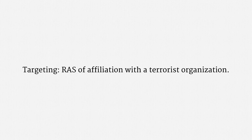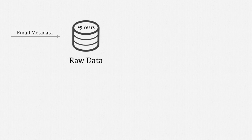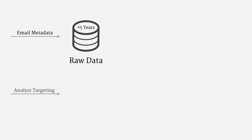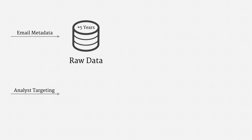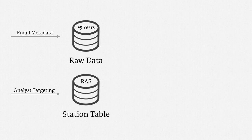Here's my understanding of how it worked, with the caveats that I'm slightly simplifying and slightly borrowing from what's known about the phone metadata program, since there's been more disclosed about that. Email metadata flowed in, in bulk, from collection points on the domestic internet backbone. That raw metadata was stored in an access control database for about a rolling five-year period. Technicians could look it over to make sure systems were functioning properly, but ordinary analysts couldn't access the data. Separately, analysts suggested targeting criteria for the collected metadata — specifically, they picked out email addresses and similar so-called selectors with reasonable, articulable suspicion of affiliation with terrorist groups. After some internal review, those targeting criteria were saved in another database called the station table.